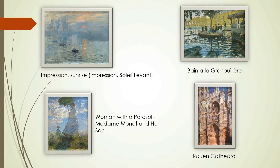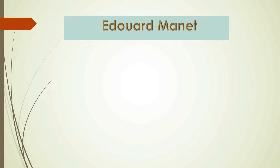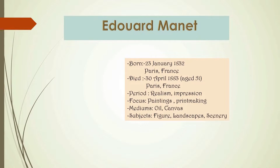Edouard Manet was born on 23 January 1832. He was a French modernist painter. He was one of the first 19th century artists to paint modern life, as well as a pivotal figure in the transition from Realism to Impressionism.